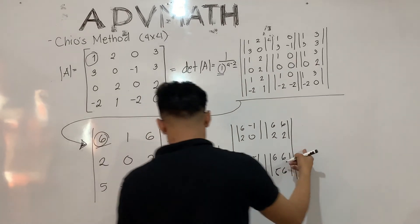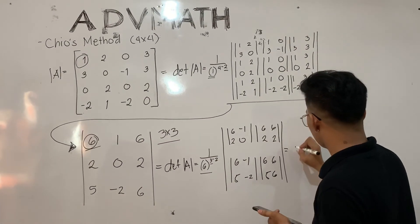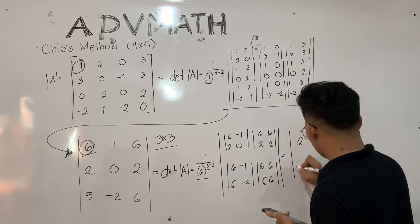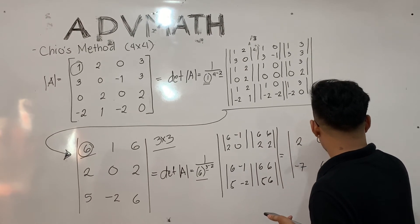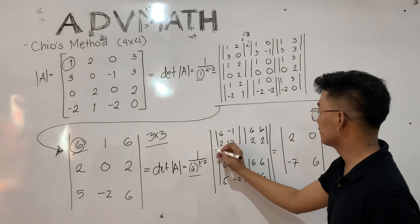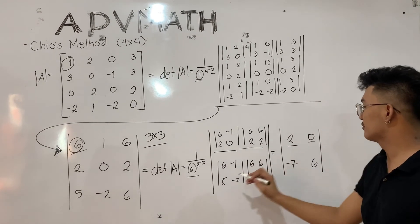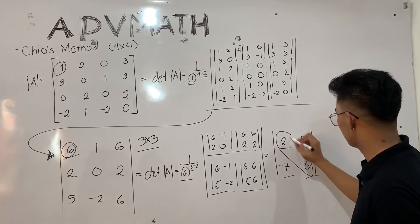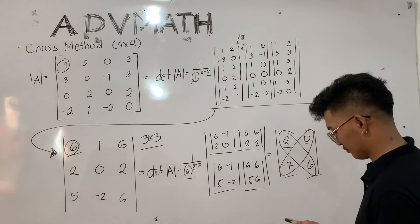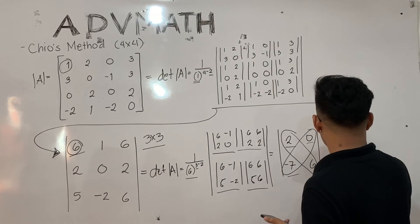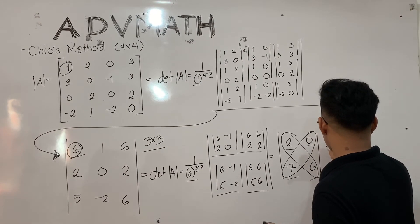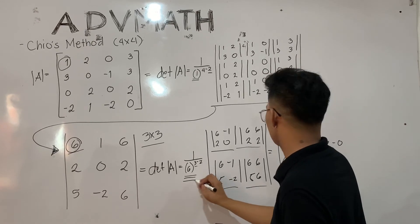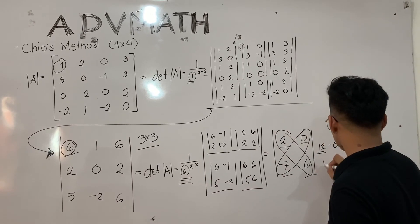After grouping the matrix, we cross multiply and subtract the first product from the second product. As a result, we get: 2, 0, negative 7, and 6. To get the determinant, we multiply A11 by A22 then subtract A12 by A21, giving us 12, which we then divide by 6.